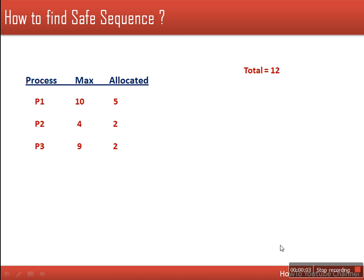Hello everyone. In this video we will see how to calculate or find out a safe sequence. The safe sequence is used to check whether a system is in deadlock state or not. If a system's current allocation results in a safe sequence, there won't be any chance of deadlock. But if there is no safe sequence, that will be called an unsafe state, and in an unsafe state there are chances of deadlock.